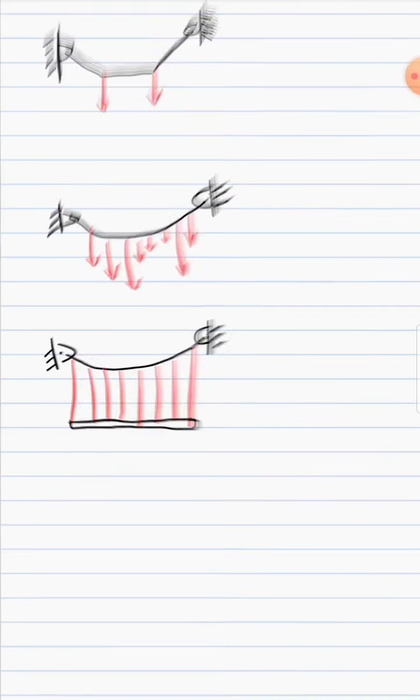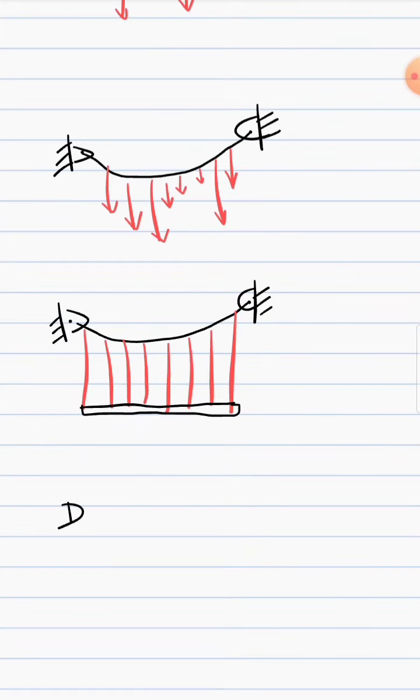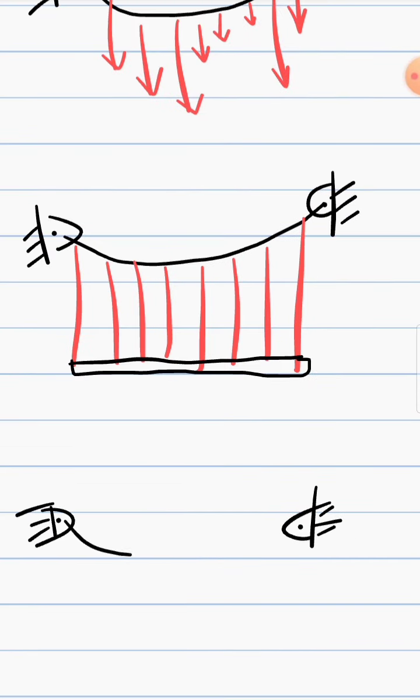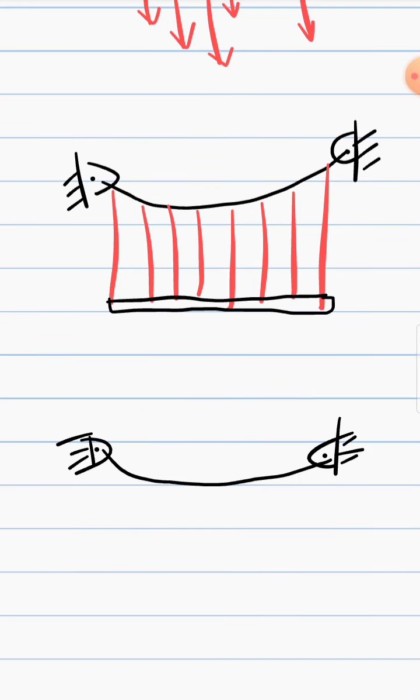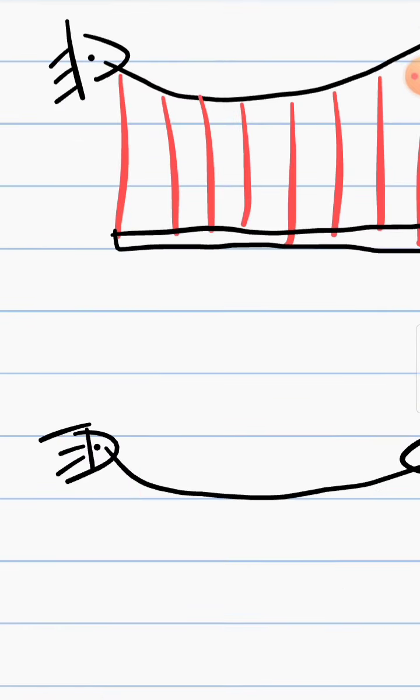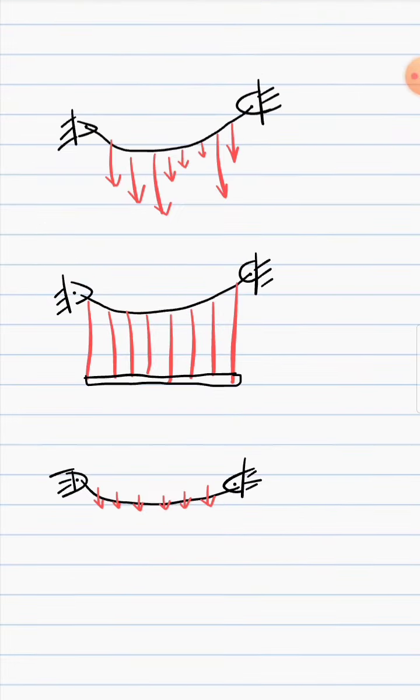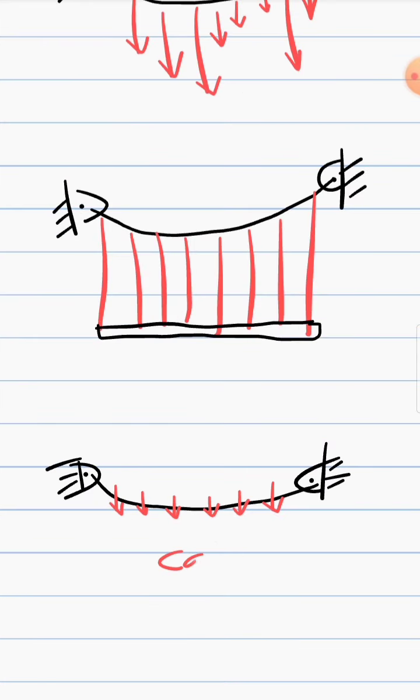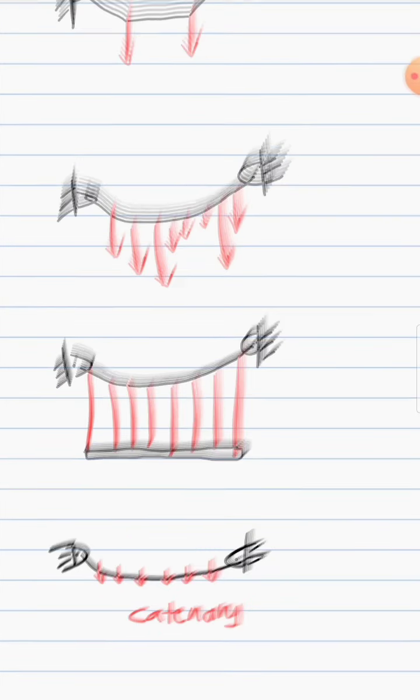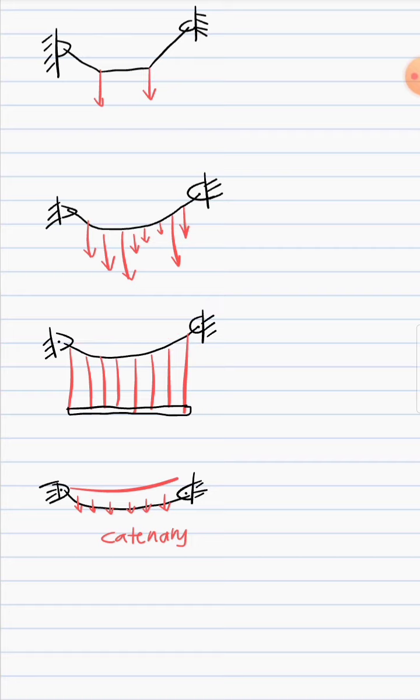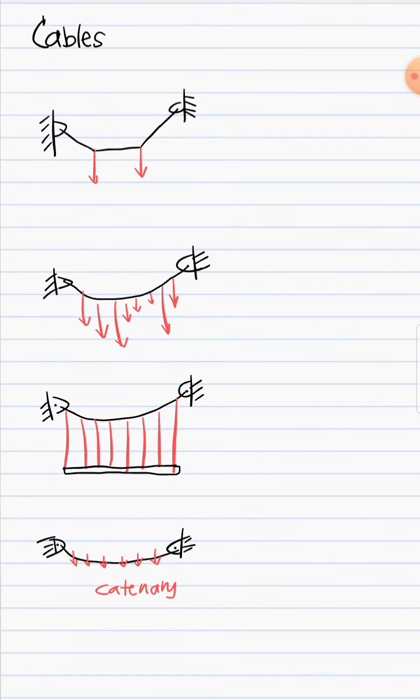The last one is when a cable carries its self-weight, and this we call it as catenary. The shape of this is now different from the shape of these two since these two are parabolic, well this one is not, although there are cases that catenary can be assumed to have a parabolic shape.